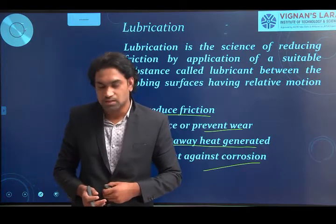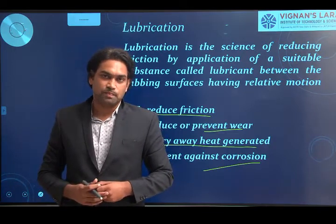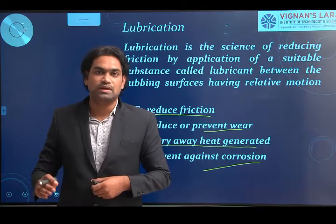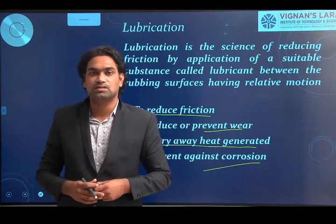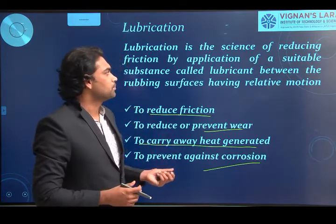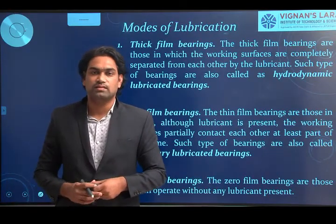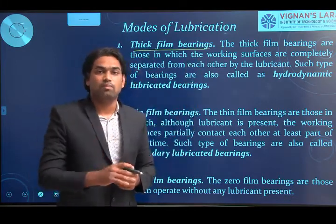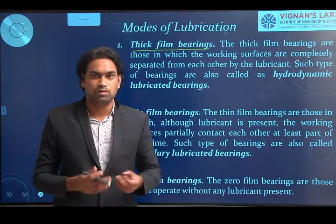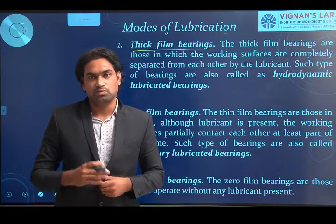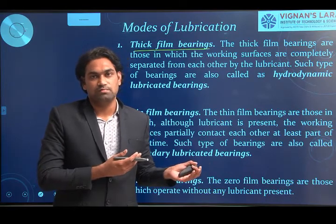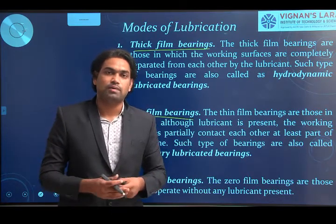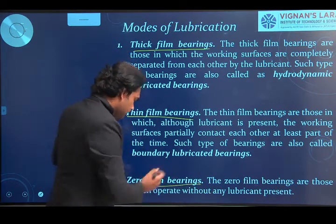Before that, there are different types of lubrication processes we can follow in bearings — the basic modes of lubrication. Lubrication is essential to operate bearings with minimum friction. In sliding contact bearings, we have three different basic modes of lubrication: thick film lubrication, thin film lubrication, and zero film lubrication. The bearings operating under these methods are called thick film bearings, thin film bearings, and zero film bearings respectively.